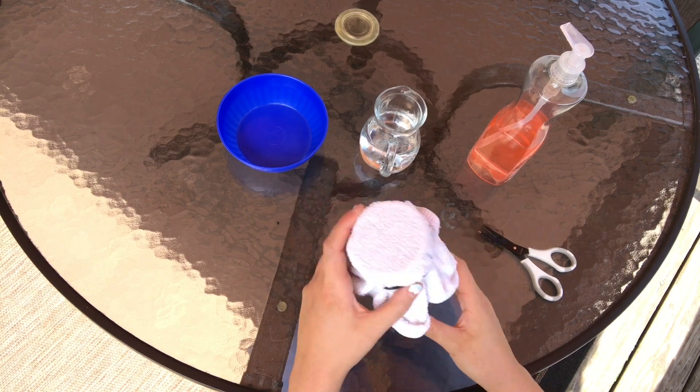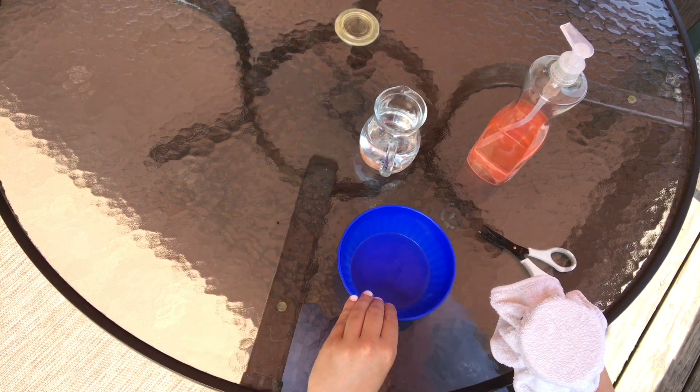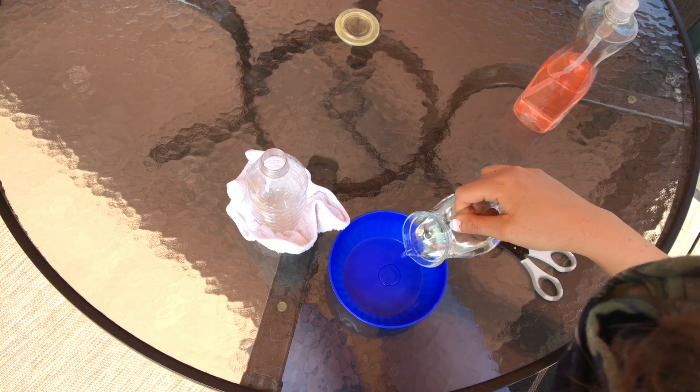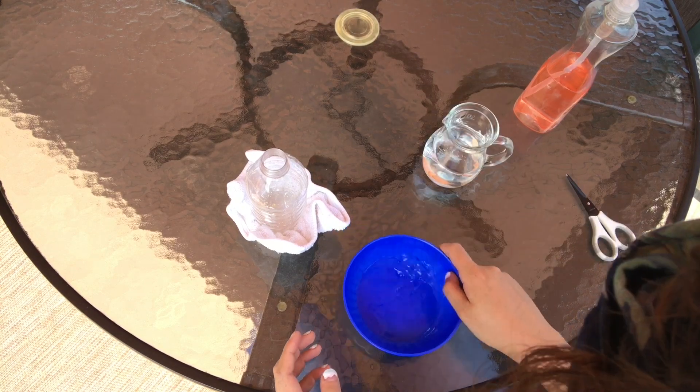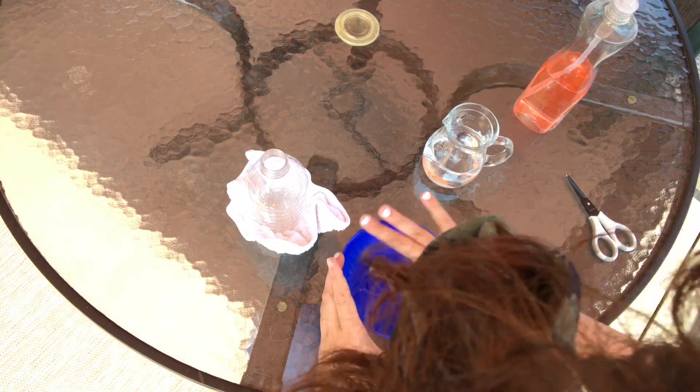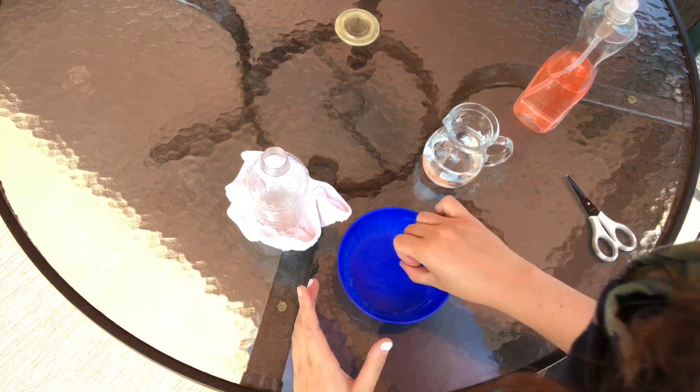Now I'm going to take a bowl and add some dish soap and water and I'm going to swirl that around to make a bubble mixture. I'm going to mix it with my finger a little bit. If you have actual bubble mix, that will also work.